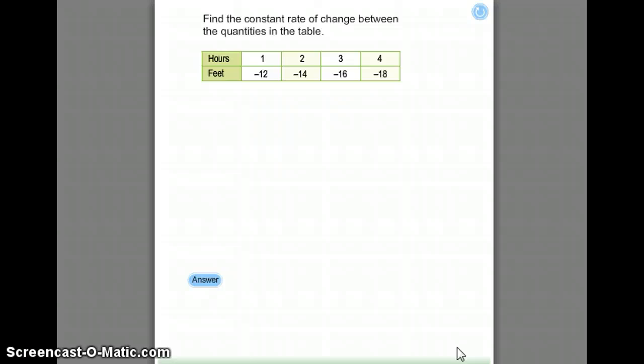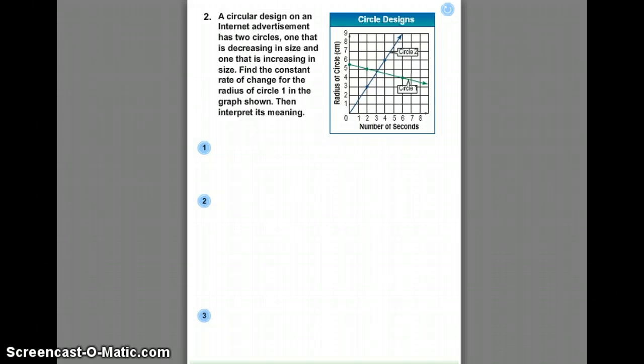Now it's your turn. Find the constant rate of change between the quantities in the table.